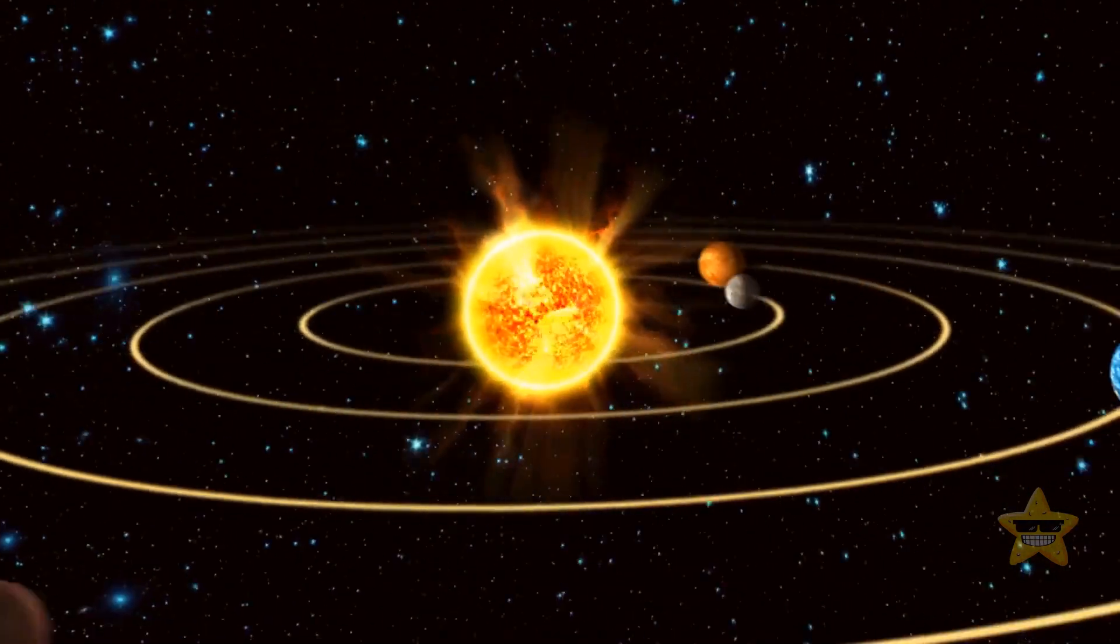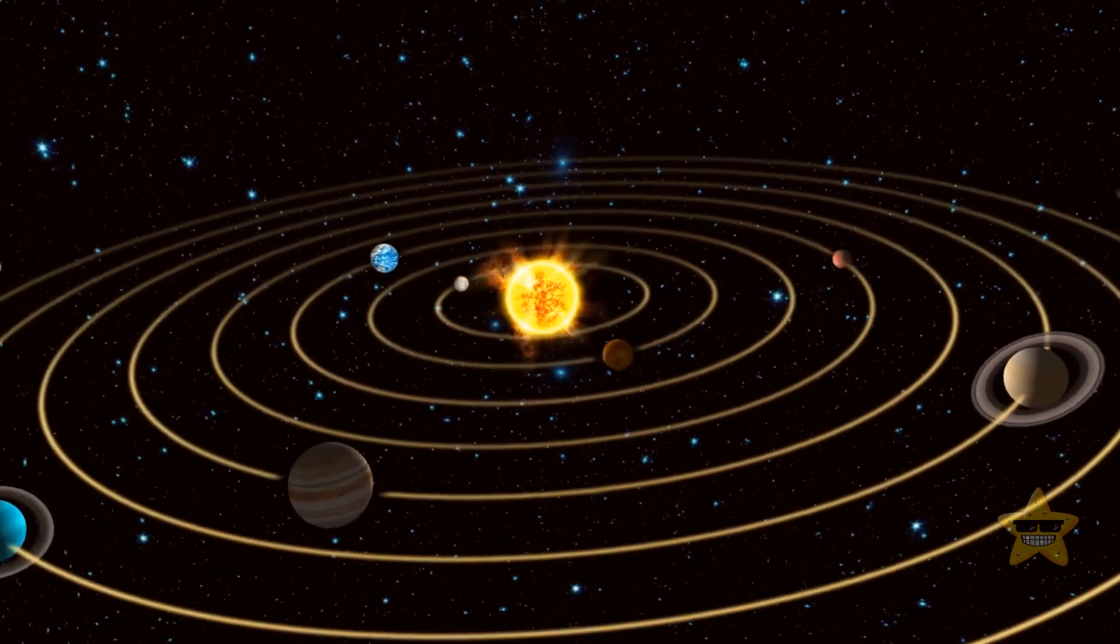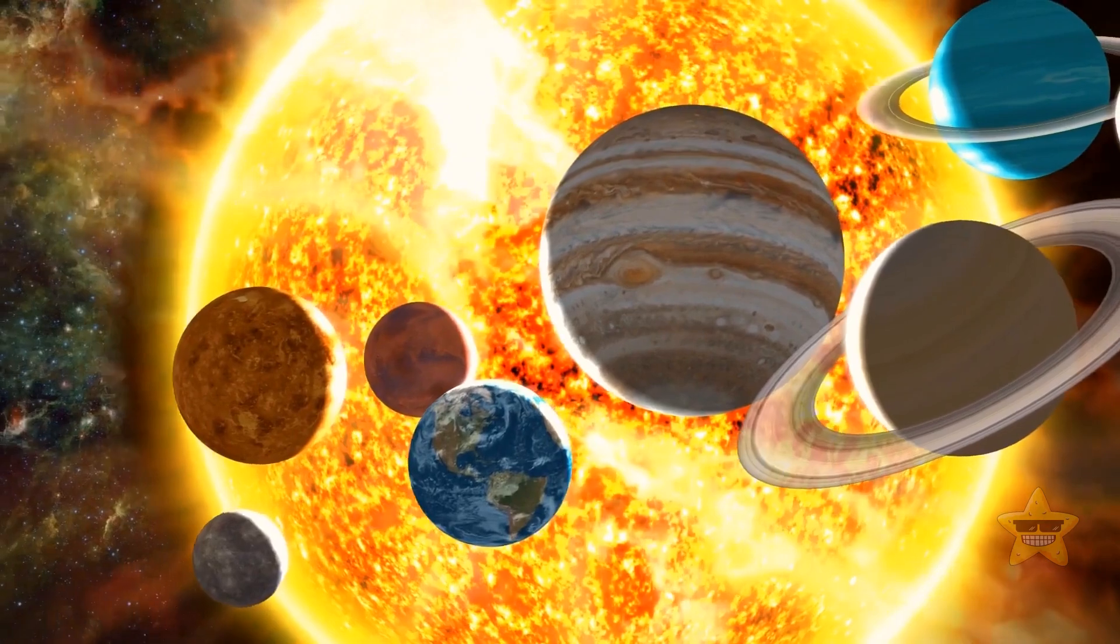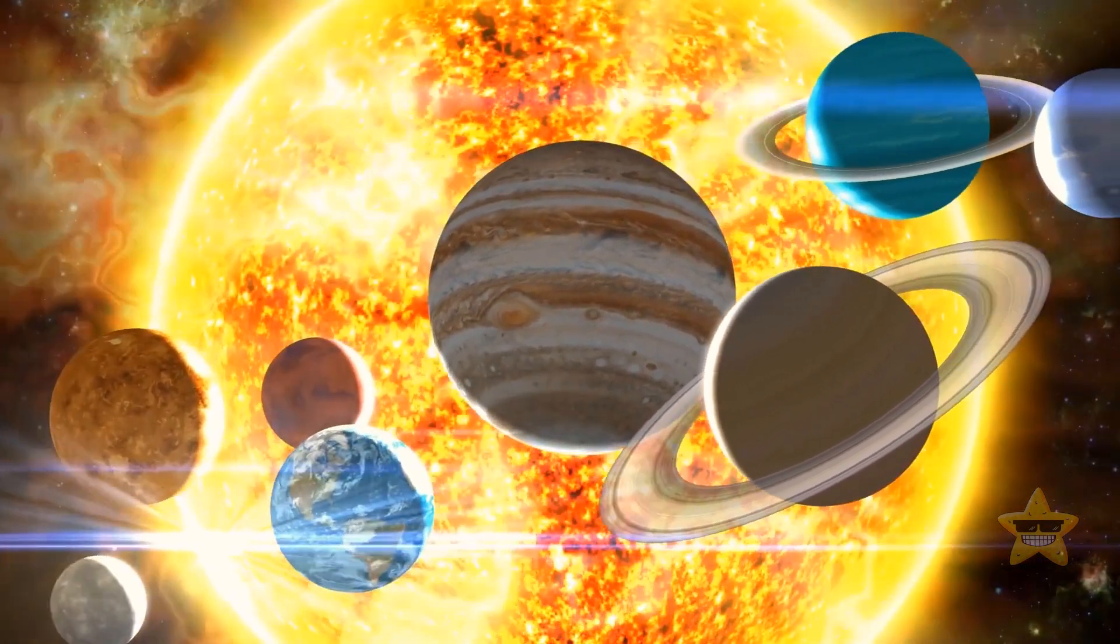This is, of course, a very simplified version of how we got eight planets in our solar system. Who knows if we'll ever know the whole truth?